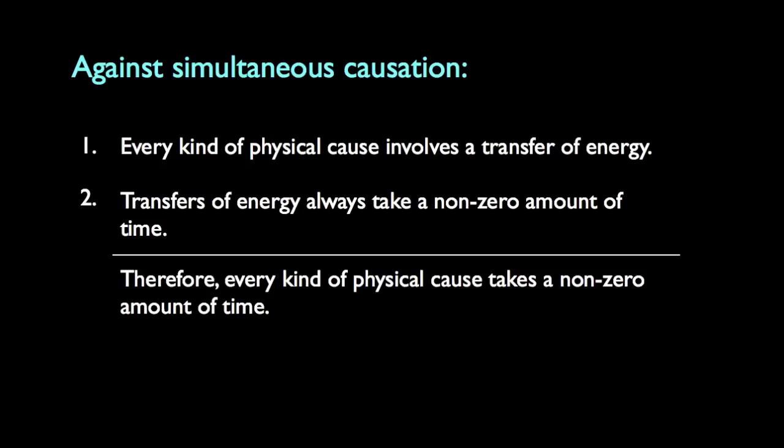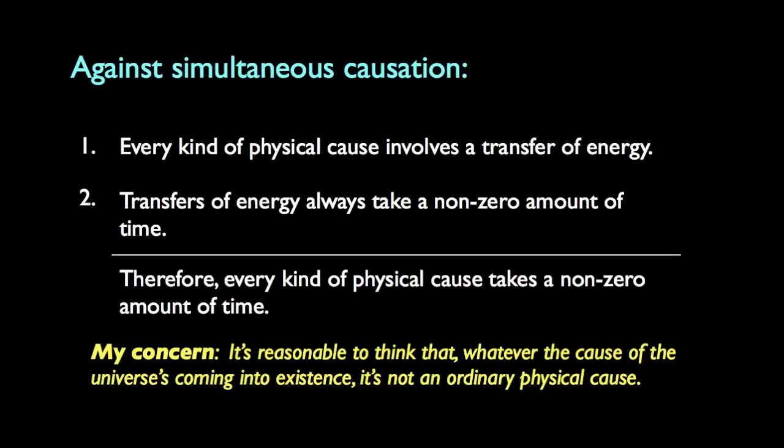My first thought is that even if we grant the two premises, there's a problem with the relevance of the argument to the specific case in mind — namely the origin of the universe. Even if every physical cause involves a transfer of energy, there's good reason to think that whatever the nature of the causal agent responsible for the universe coming into being, it's probably not an ordinary physical cause. The cause of the universe coming into existence isn't going to be like a baseball bat hitting a baseball. So a defender of the Kalam argument isn't going to find this compelling, since they're already thinking of that first cause as a very special kind of cause.